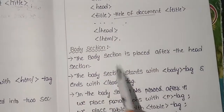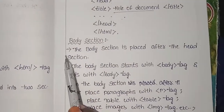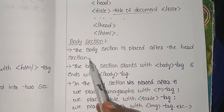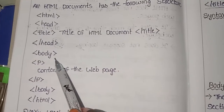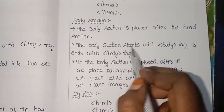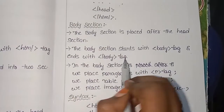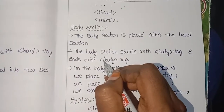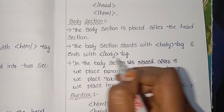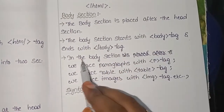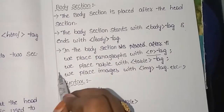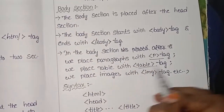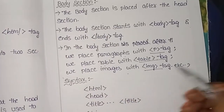Next, the body section. The body section is placed after the head section. Once the head section is complete and closed, the body section begins. The body section starts with the body tag and ends with the body tag. It starts with elements like table tags, image tags, and so on.